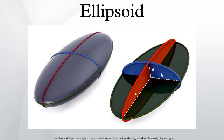Mathematical literature often uses 'ellipsoid' in place of 'triaxial ellipsoid.' Scientific literature often uses 'ellipsoid' in place of 'ellipsoid of revolution' and only applies the adjective 'triaxial' when treating the general case. Older literature uses 'spheroid' in place of 'ellipsoid of revolution.'